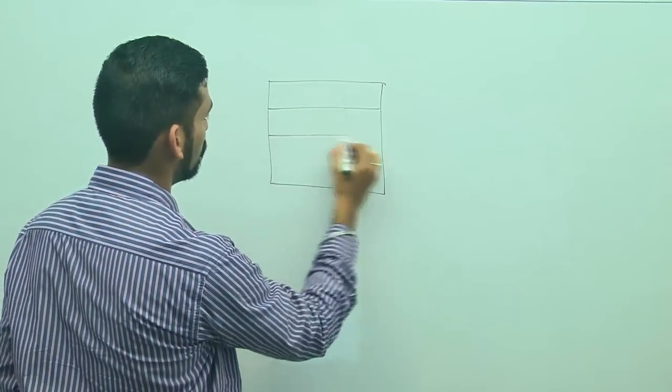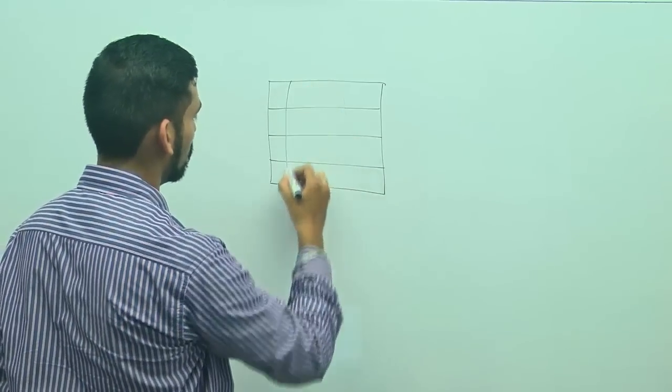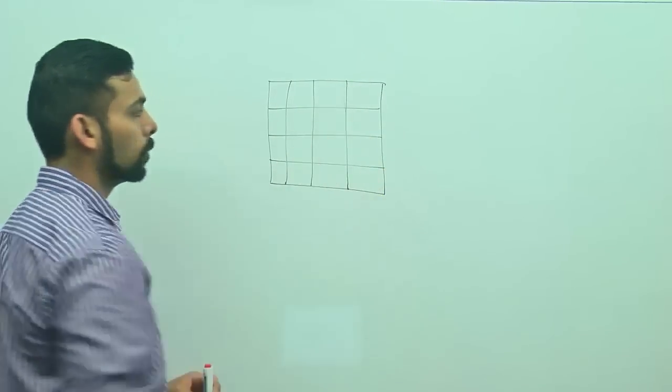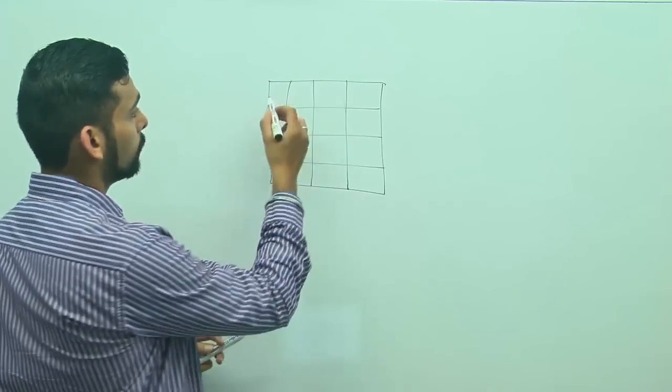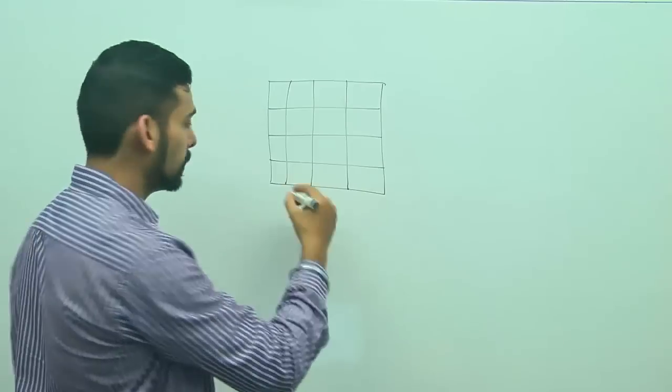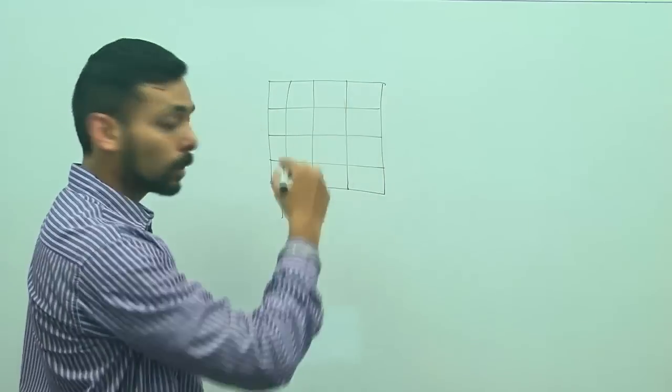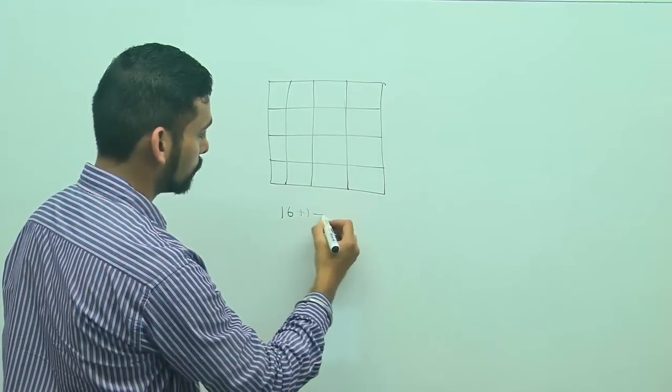1, 2, 3 and 4. 1, 2, 3 and 4. So, I have 4 by 4. That means, 16 squares inside and 1 big square outside. So, 16 plus 1.